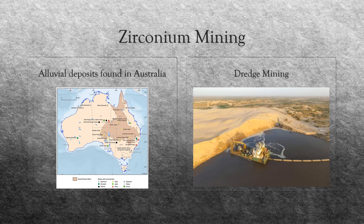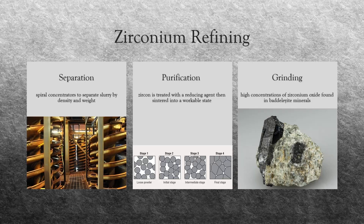This collected material of zirconium-infused sand or gravel is often referred to as zirconium sand. The process of refining zirconium can be broken down into three steps: separating, purifying, and grinding.